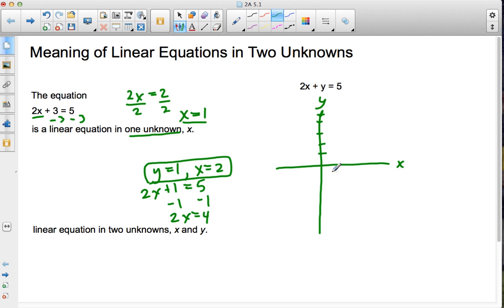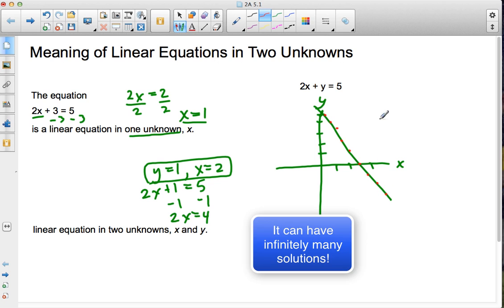Go 1, 2, 3. My line would look something like this. That means that any point on this line is a solution for the equation 2x plus y equals 5. So as we can see, we have many solutions.